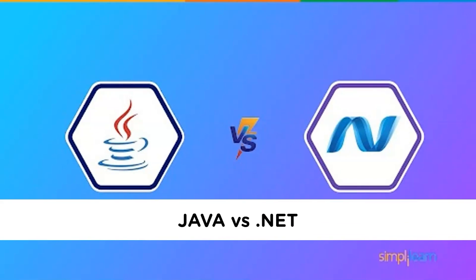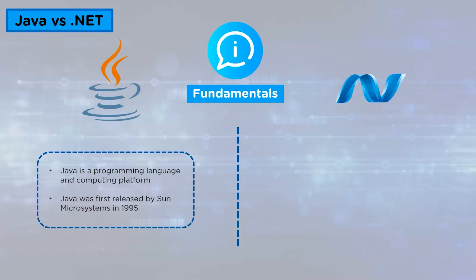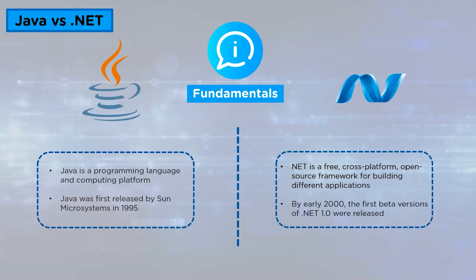Now let us look at the comparison between Java and .NET. The first parameter is Fundamentals. Java is a programming language and computing platform first released by Sun Microsystems in 1995 — a widely used object-oriented platform running on billions of devices including computers, mobiles, medical devices, and many others. Whereas the .NET framework is a free, cross-platform, open-source framework for building different applications, with the first beta version of .NET 1.0 released by early 2000.